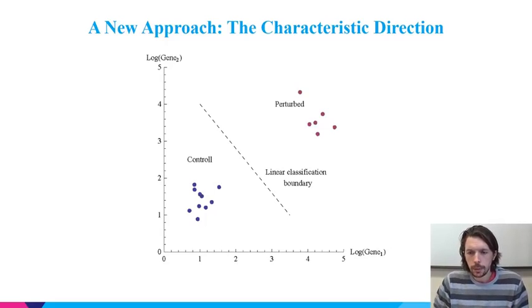Now, the way we calculate this direction is to first use a linear classification boundary. We use the structure and the data in order to best divide the expression space into two regions, one belonging to the control state, and one identified with the perturbed state. Now, a linear classification boundary takes the form of a hyperplane. It's a high-dimensional version of a plane. And the orientation of a hyperplane is determined by its normal vector. Now, this normal vector is what we are going to interpret as being the direction that best characterizes the differential expression.